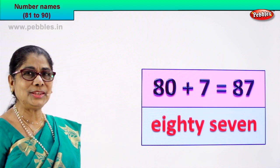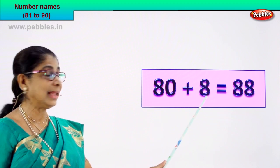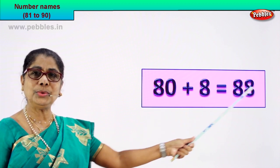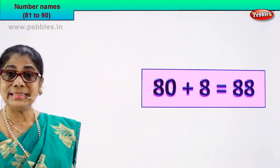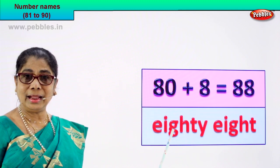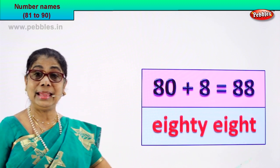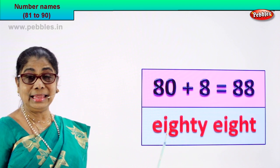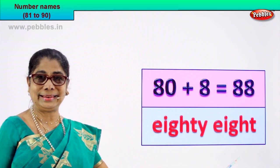Did you enjoy? Let's take the next numeral. 80 plus 8 is equal to 88. The numeral 8 and 8, 88. You know to spell 80 and 8. So: E-I-G-H-T-Y and E-I-G-H-T — eighty-eight, 88. Good!